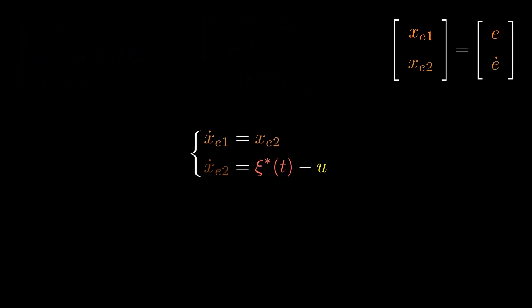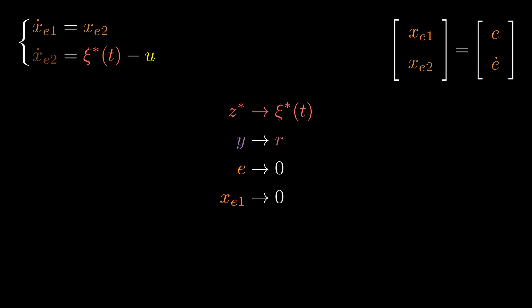Now, we are ready to derive a new extended state observer and a control law. But before that, let's recap our goals. Main goal of the extended state observer was to estimate the total disturbance ξ, so the new observer needs to track the even more total disturbance ξ star. We do all that in order to make the output signal y track the reference signal r. That's equivalent to making the error signal e go to zero, which can be rephrased as making the first state of the new state vector xe go to zero.